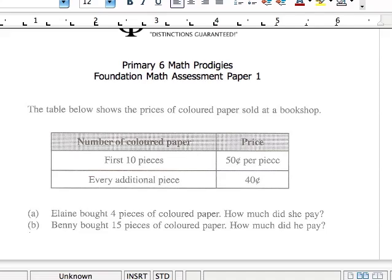So I need you to have your questions at hand because we're going to move in very fast right now. Okay, the first question, let's take a look at your paper right now. Your first question is this. The table below shows the prices of colored papers sold at the bookshop. Excuse me, my phone. Okay, and Elaine bought four pieces of colored paper. How much did she pay?